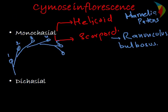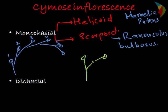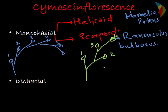In the scorpioid type, we have the first flower, second flower, and third flower. This is the typical structure of the scorpioid type. The common example is Ranunculus bulbosus.